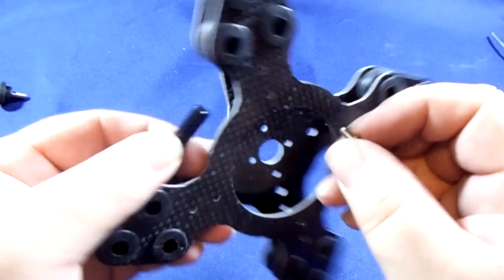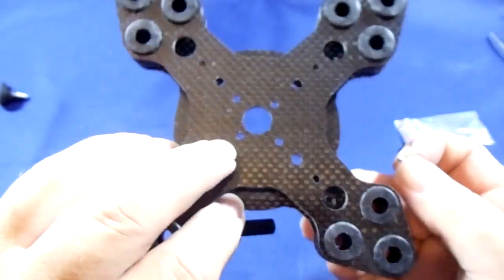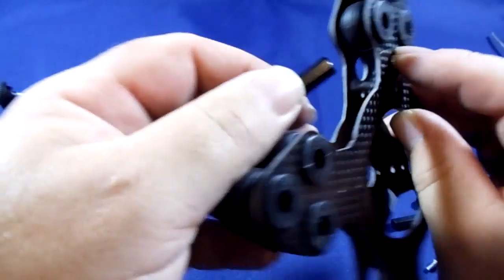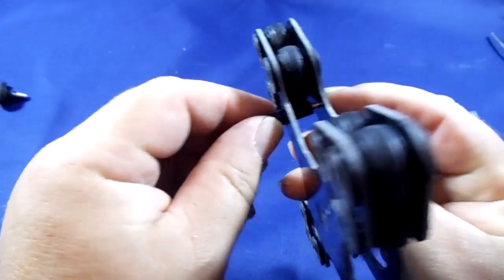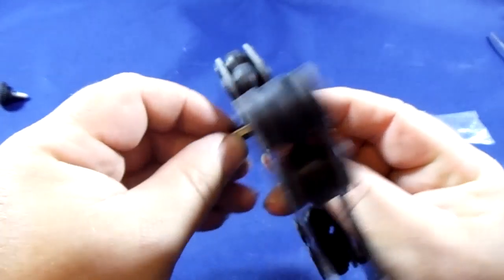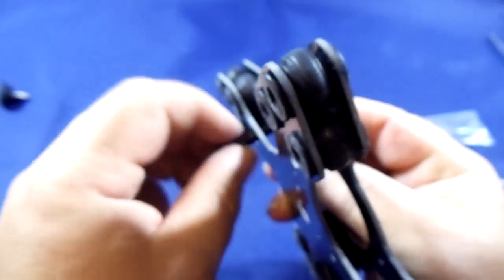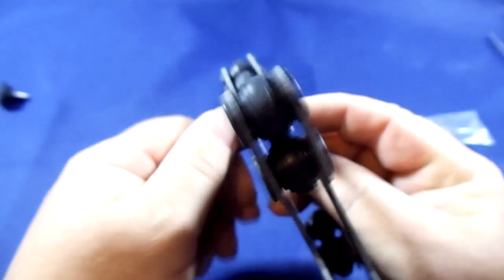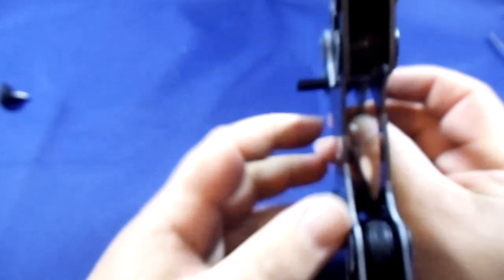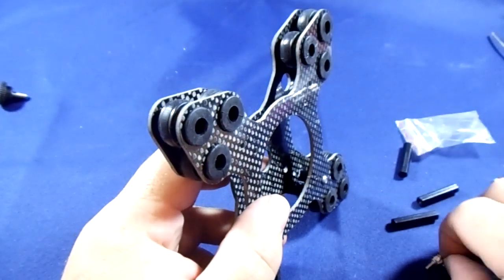I believe it's the first hole. Easiest way I find is just put it through the bottom, put your finger over it, put the standoff over the top and just twist it tight.